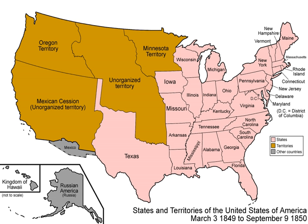The compromise became possible after the sudden death of President Zachary Taylor. Although a slave owner, he had wanted to exclude slavery from the Southwest. Whig leader Henry Clay designed a compromise, which failed to pass in early 1850 because of opposition by both pro-slavery Southern Democrats, led by John C. Calhoun, and anti-slavery Northern Whigs.